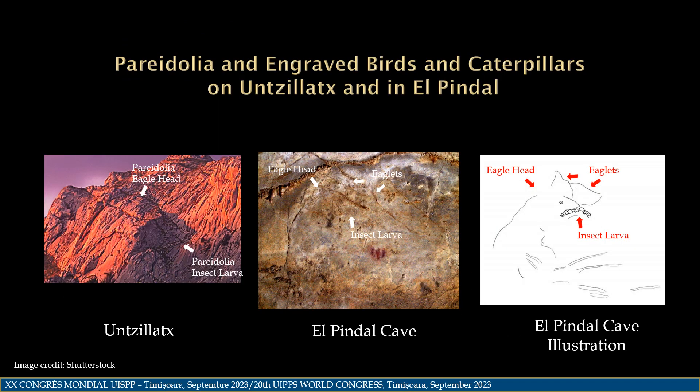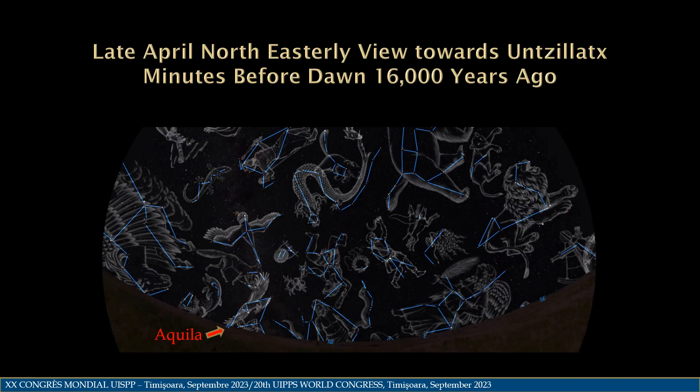Remember our northeasterly view of the Bonelli's eagle on the face of Untiaks. Looking in that same direction minutes before dawn 16,000 years ago, we can see the constellation Aquila. On the eagle's astronomical path, she will fly just above the visual horizon to meet with Untiaks and the hungry eaglets on her journey into the dawn.